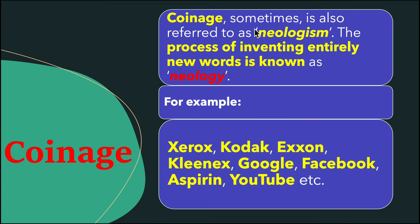Usually words are coined to express new ideas, processes, products, etc. in the language. Coinage is sometimes also referred to as neologism — the process of inventing entirely new words; this process is known as neology. For example, newly invented terms in modern times include: Xerox, Kodak, Exxon, Linux, Google, Facebook, aspirin, YouTube, etc.